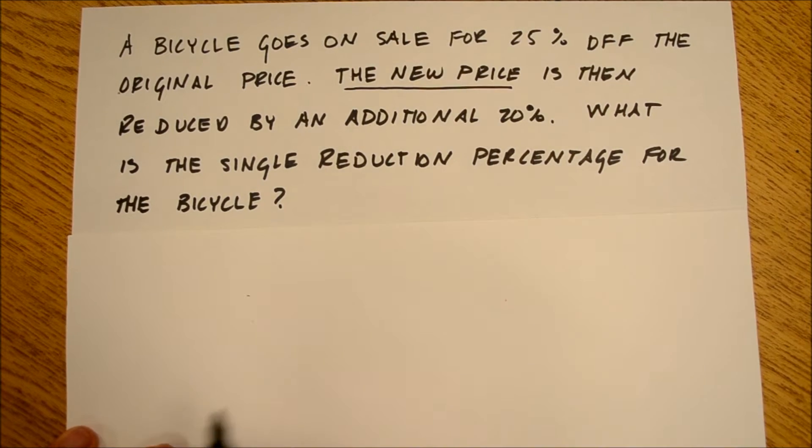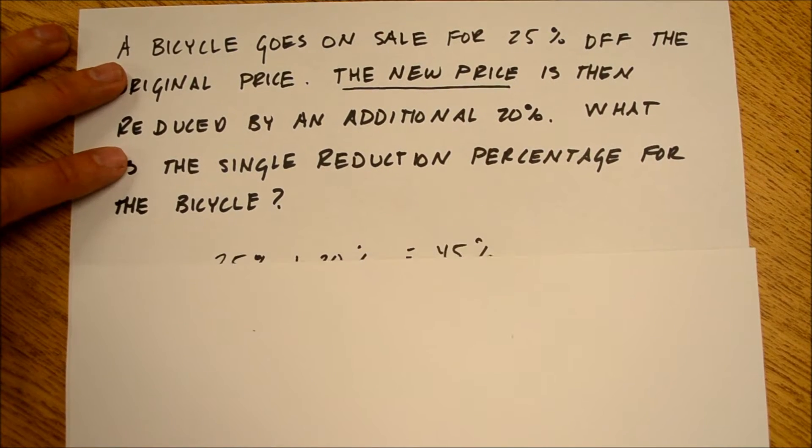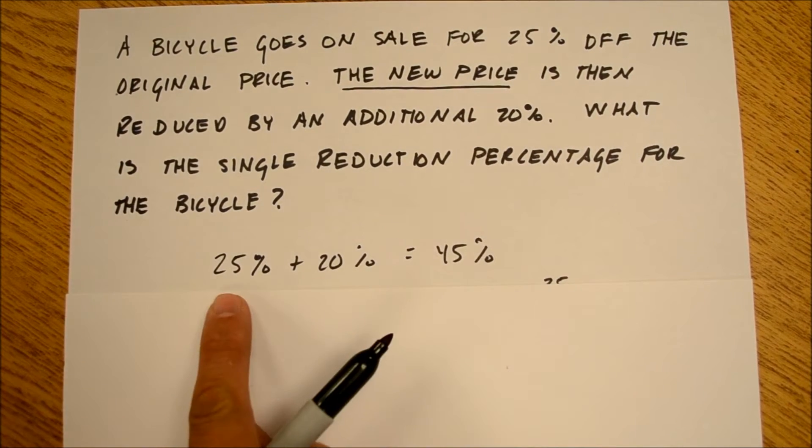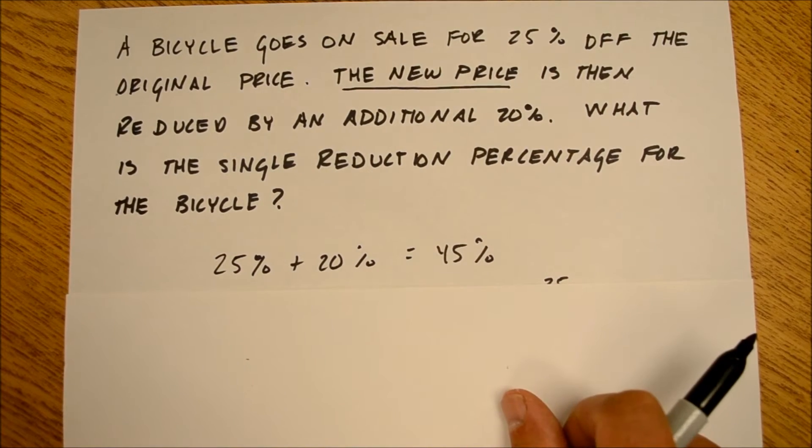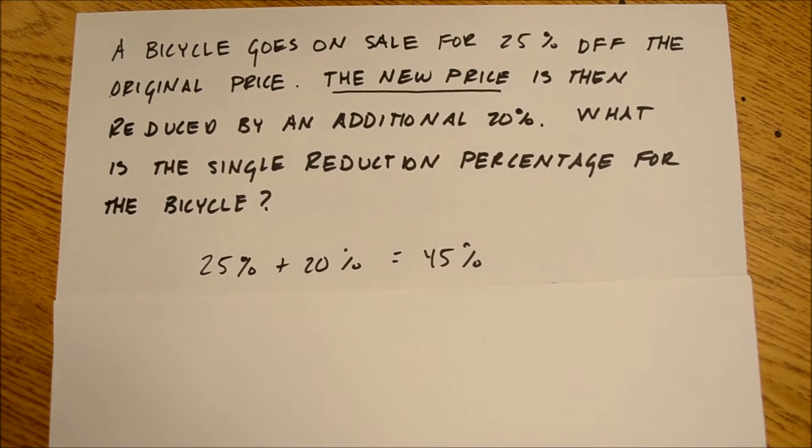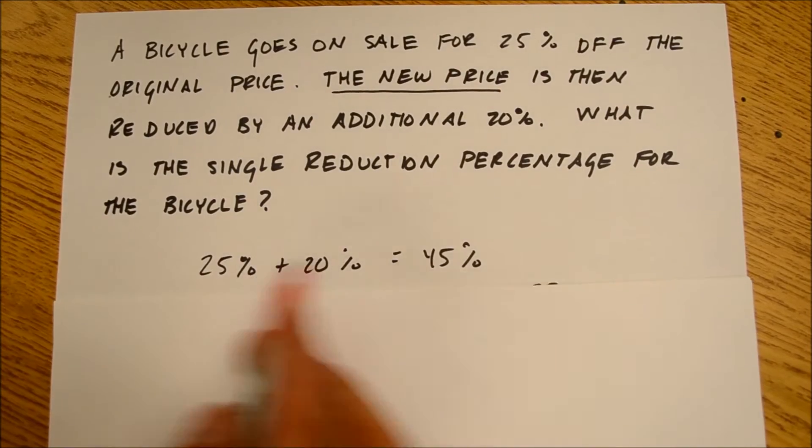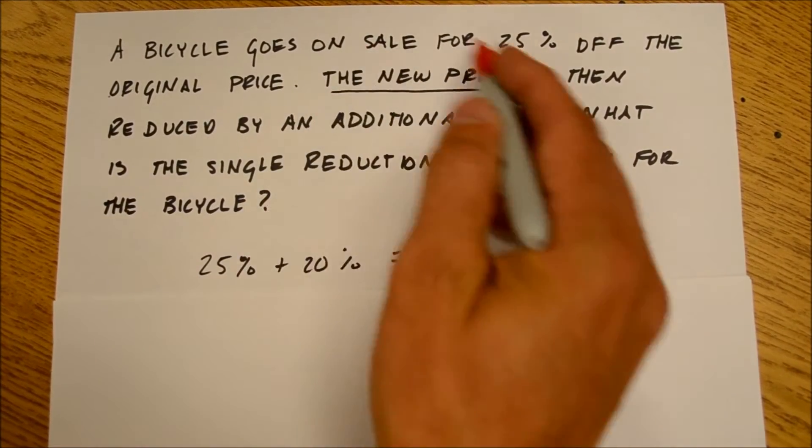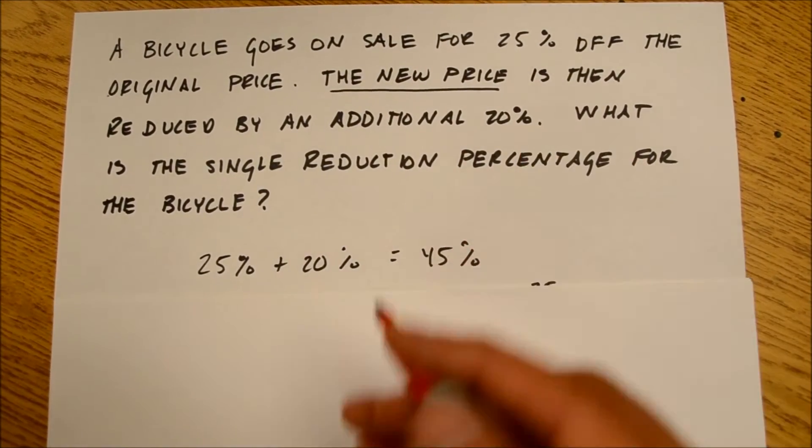And, as expected, most of the kids did this. 25% plus 20% is 45%. So after talking about what's wrong with this for a while, the kids realized there's a new price you're taking the 20% from.